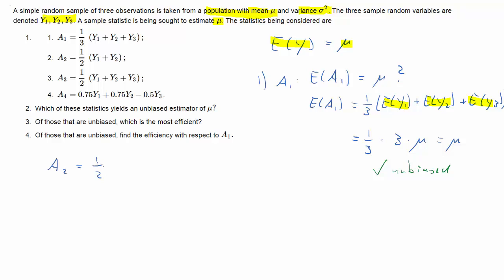What about A2? Here we are basically not using the third observation, only using the first two observations. So let's calculate the expected value of A2. It's a half times the sum of the expectation of the two individual random variables y1 and y2. Each of them again will have an expected value of mu. So it's 1 over 2 times 2 times mu, so again mu and therefore again A2 is an unbiased estimator despite not using observation 3.